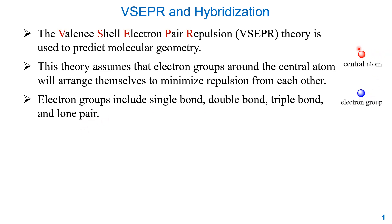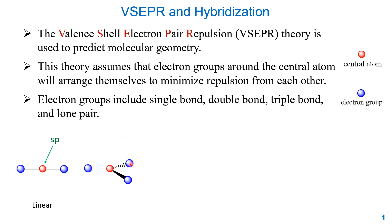I will use red to show the central atom and blue to show the electron groups. If we have two electron groups, to minimize repulsion they will be linear — so that is the geometry of the electron groups, and the central atom will be sp hybrid. If there are three electron groups, the geometry will be trigonal planar, and the central atom will be sp2 hybrid.